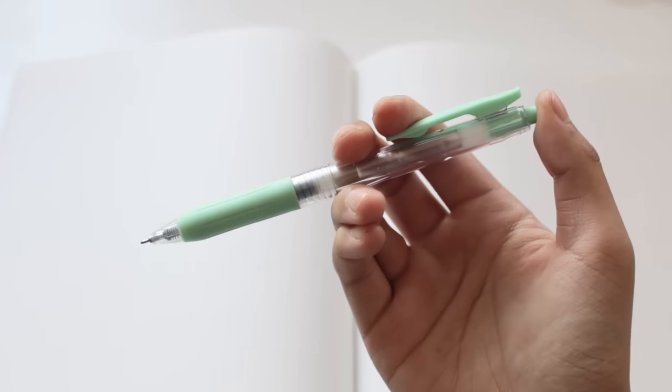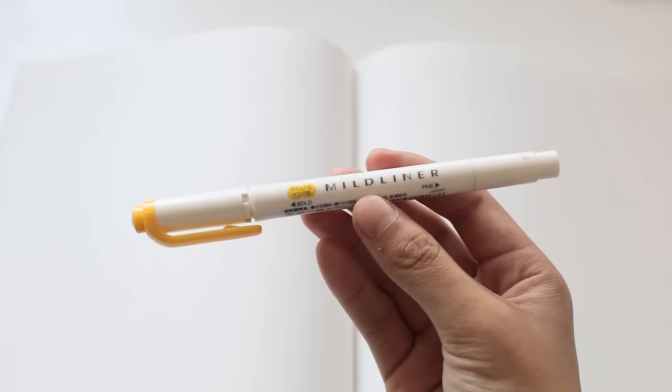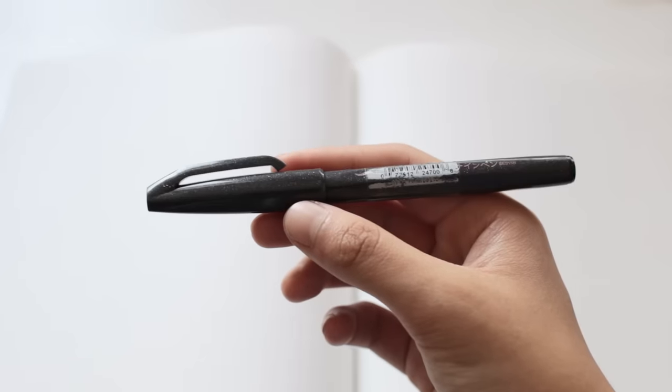The supplies I use are a graph paper notebook, a black pen, one highlighter, and for the extra header, I use a brush pen.